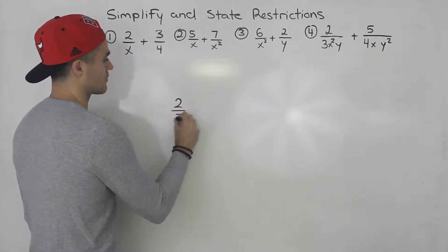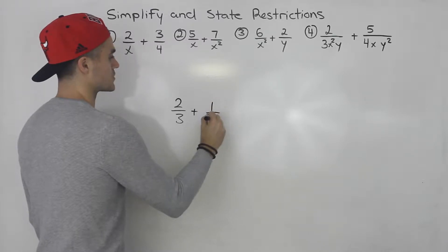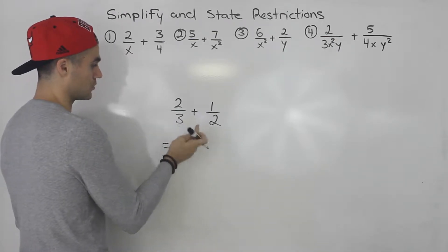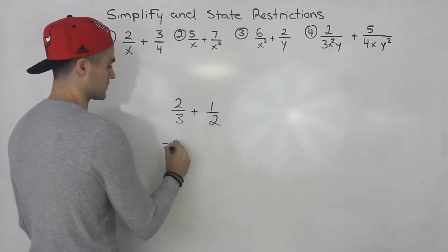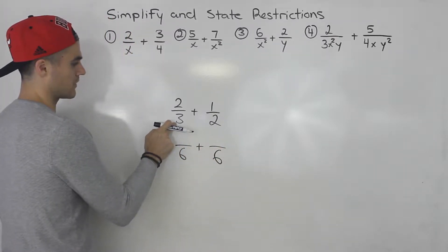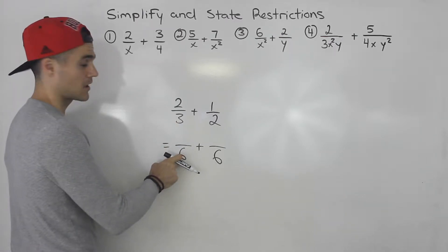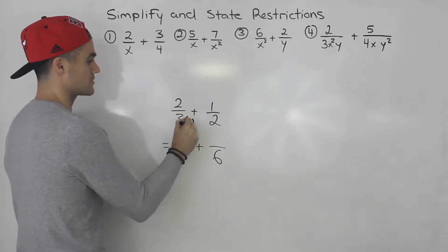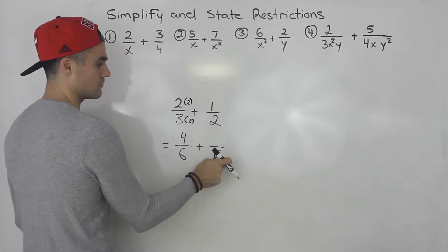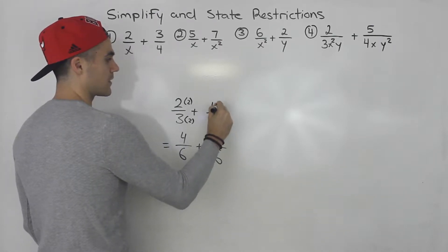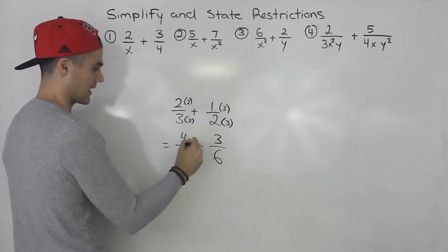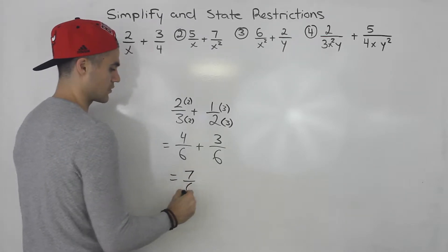Let's say I've got 2 over 3 plus 1 over 2. How would I add these two fractions? I have to get a common denominator. The lowest common denominator between 3 and 2 is 6. I multiplied the 3 by 2, so I multiply the top by 2 as well — that gives 4 over 6. I multiplied the 2 by 3, so 1 times 3 is 3. Now that we have a common denominator, we can add the numerators: 7 over 6.